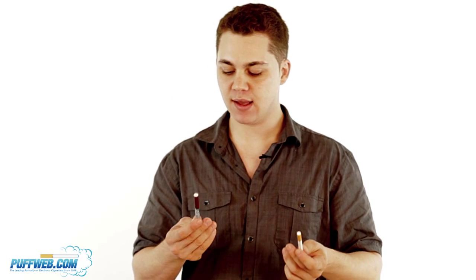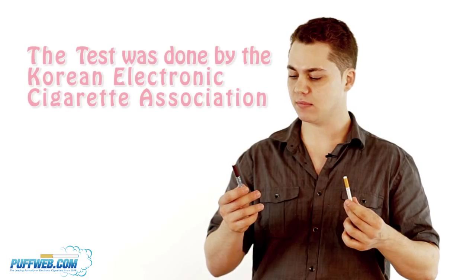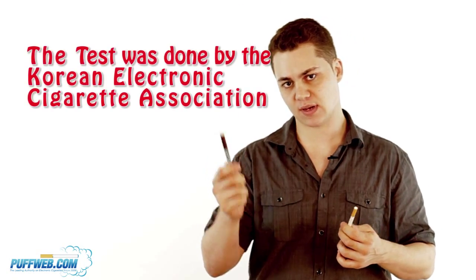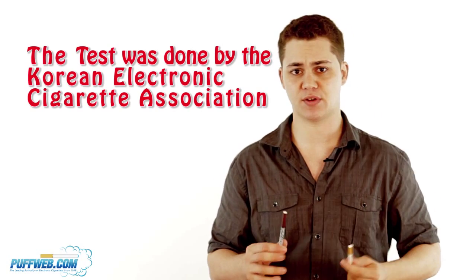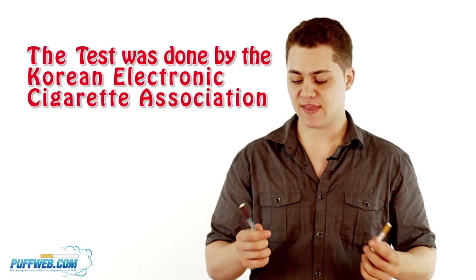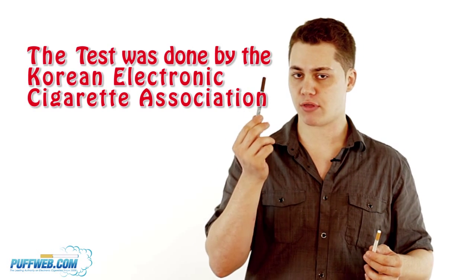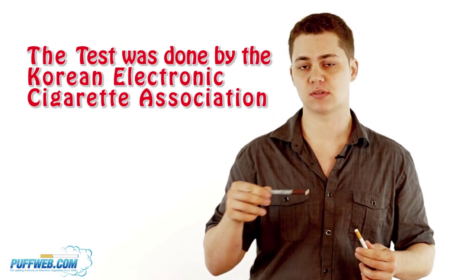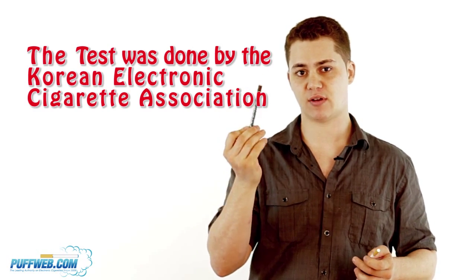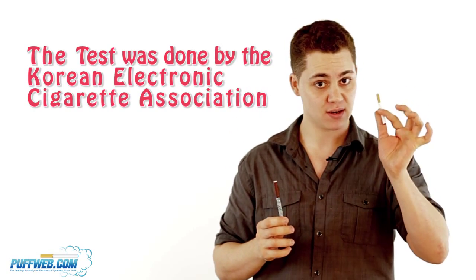Now, they took a test of both a real cigarette and electronic cigarette. They took so many puffs off an e-cigarette and so many puffs off a real cigarette, they tested what was in them. They found that there are three chemicals in an electronic cigarette. Three, not 4,000, three.